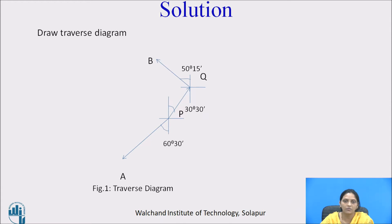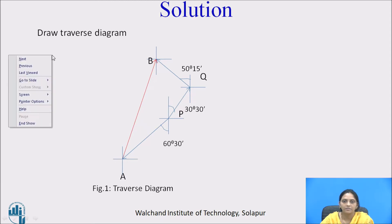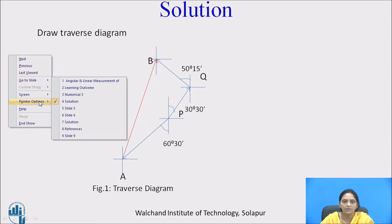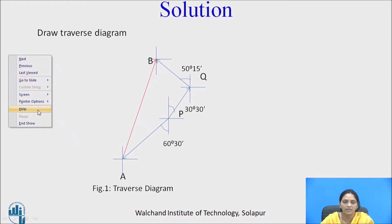The bearing of line QB is 50 degree 15 minutes. Now for line AB, we need to calculate and determine the length of line AB and also its bearing. First of all, we will determine the quadrantal bearing of line BQ, which is also called the back bearing of line QB.